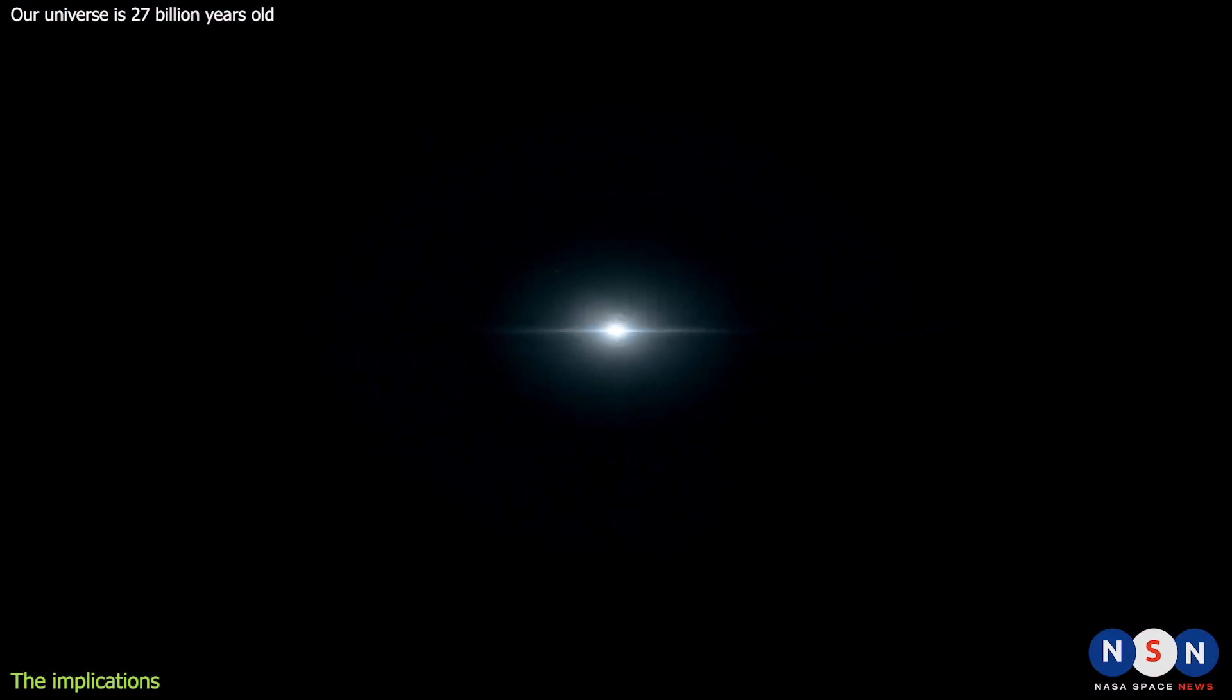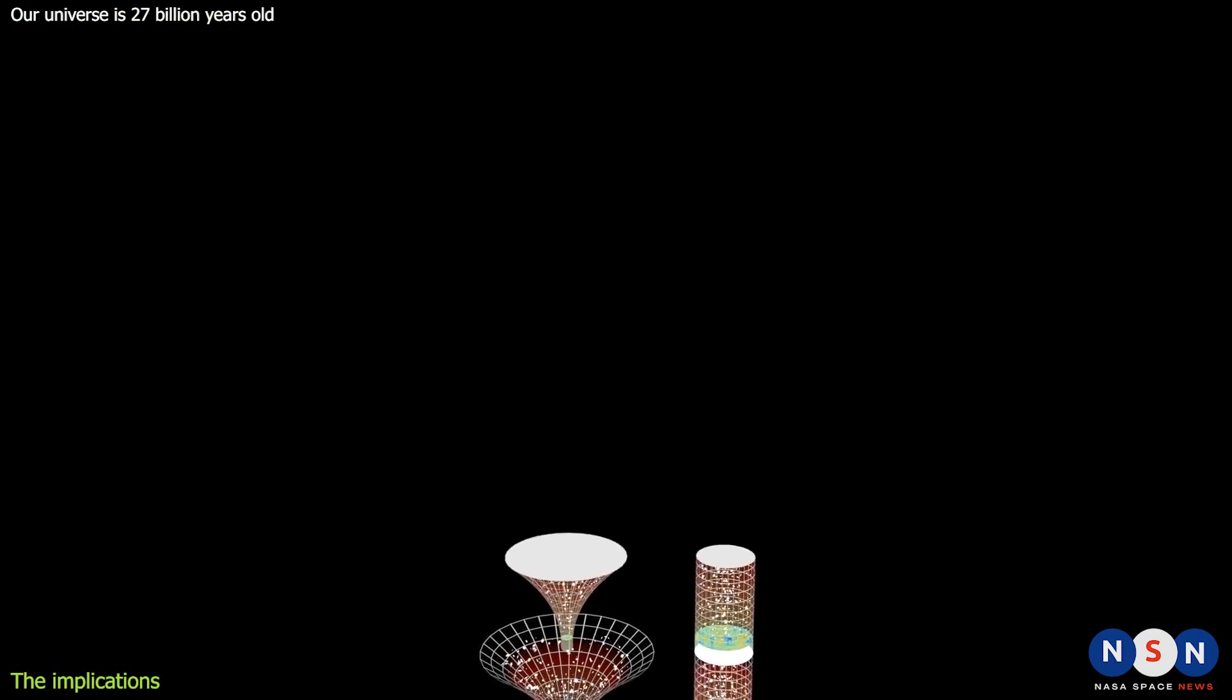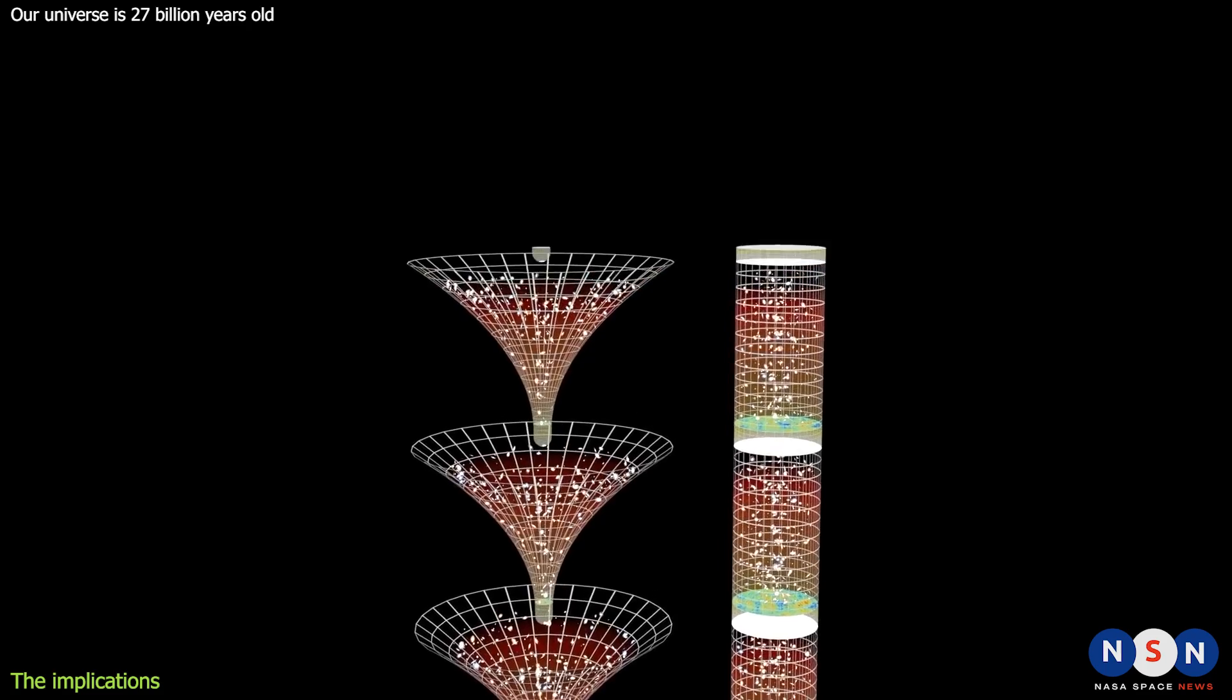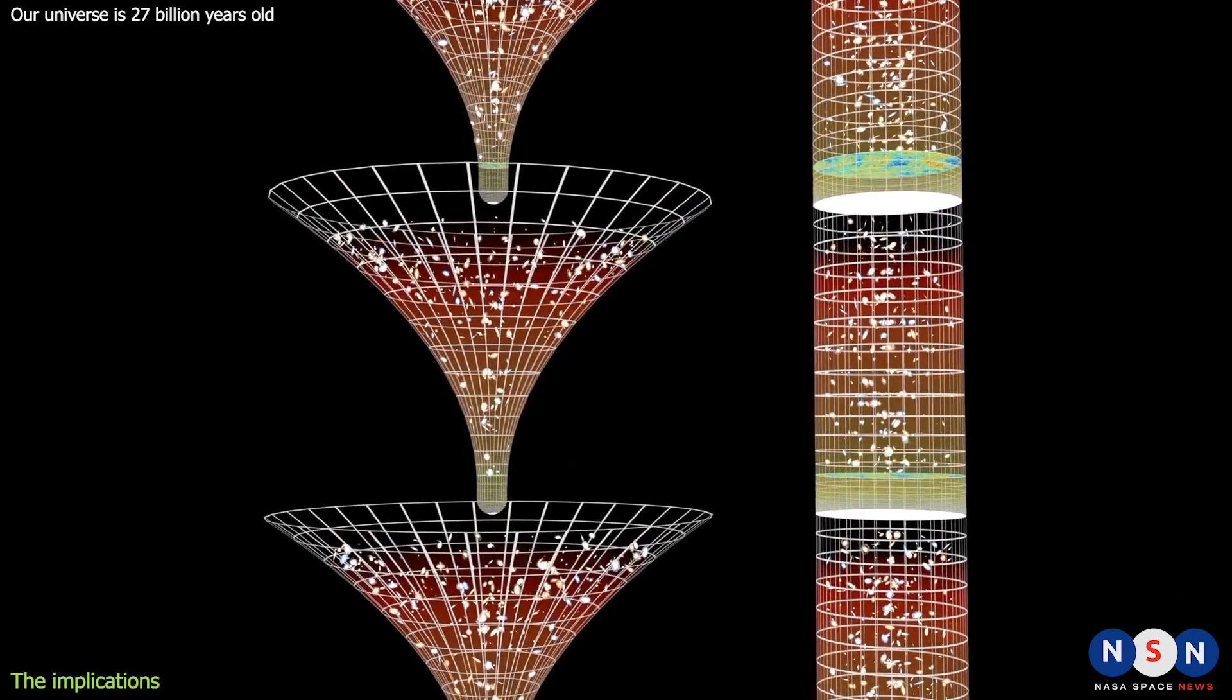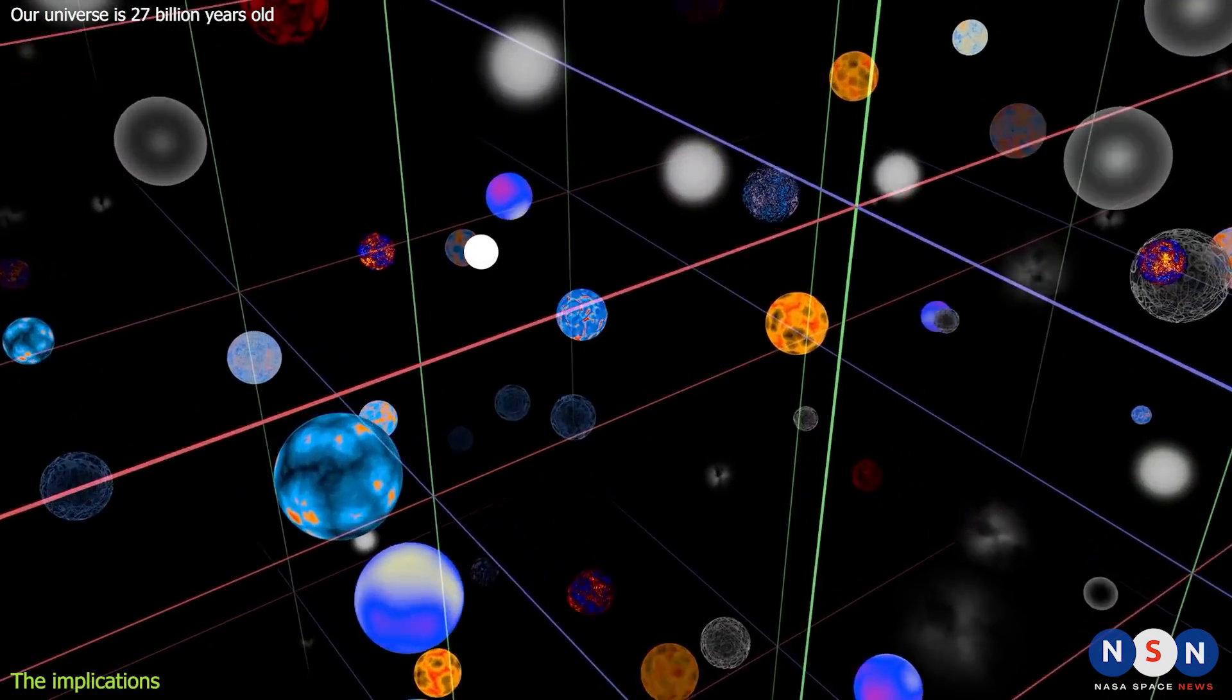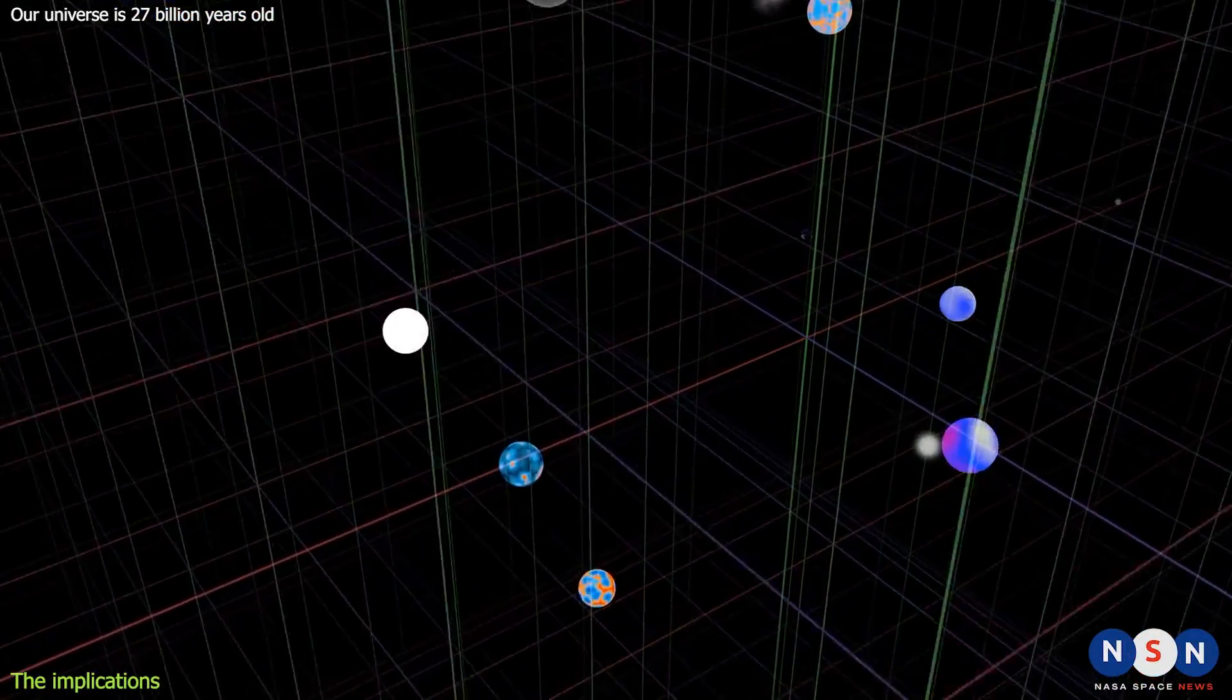If the Big Bang was the beginning of time and space, then it doesn't make sense to ask what was before it. But if the Big Bang was not the beginning, but just a phase transition or a bounce in a larger and older universe, then it is possible that there was something before it. Maybe another universe, or a different state of matter and energy. Maybe even a multiverse, with many parallel universes.